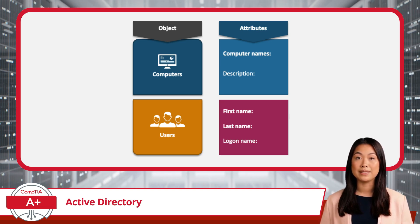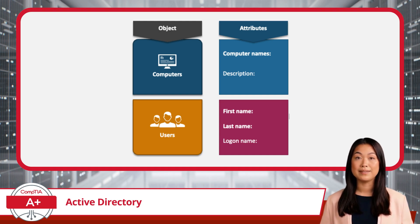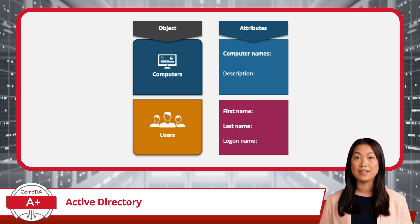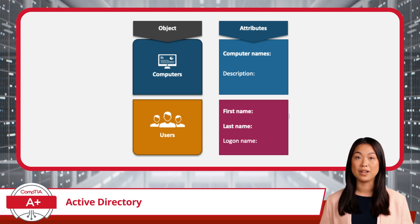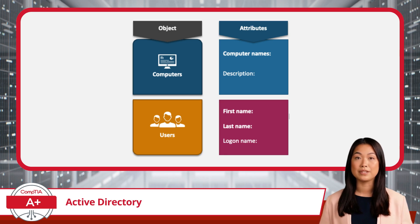One of the most common types of objects in Active Directory is the user object. A user object represents an individual user within the network. This object contains all the information relevant to that user, such as their contact details, username, password, and permissions. When a user logs into the network, Active Directory verifies their identity using the credentials stored within their user object, and then grants them access to the resources they're authorized to use. Other objects, like computers or printers, work similarly — they have their own set of attributes and permissions that determine how they interact within the domain.